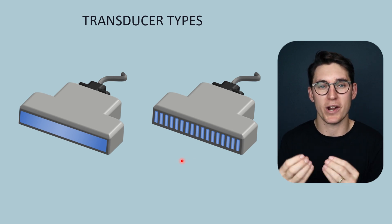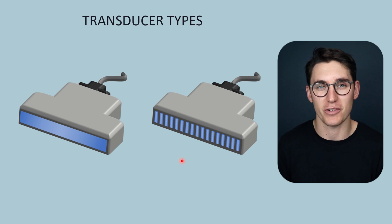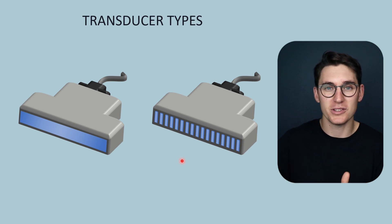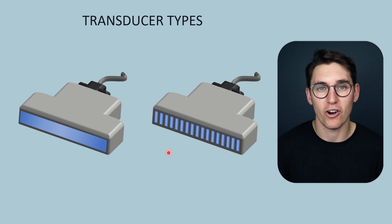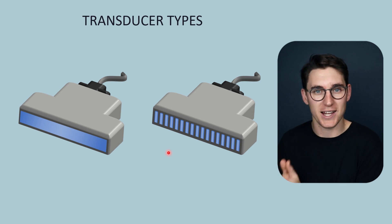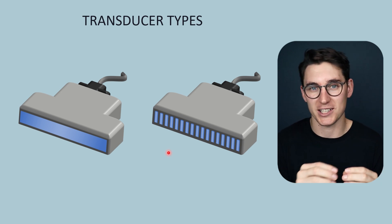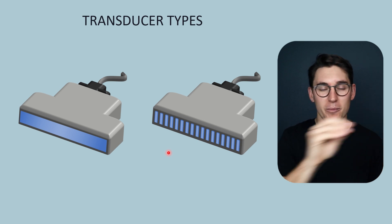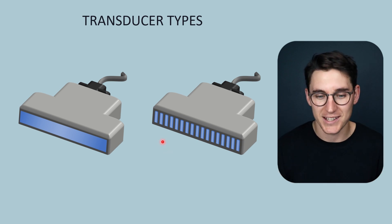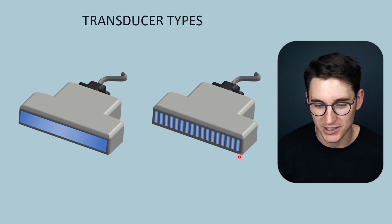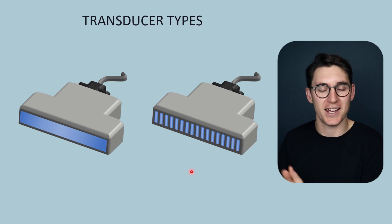What does the word array mean? When you say there's a vast array of things on offer, we're talking about multiple different items. Here we have an array of transducer elements. In mathematics, an array refers to objects or numbers organized in rows and columns — the same applies here, where we have a long row of transducer elements.